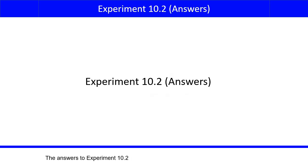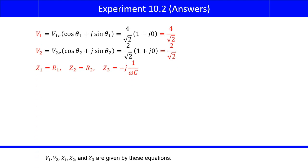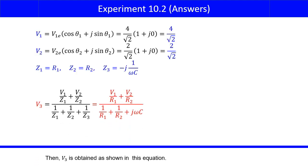The answers to experiment 10.2: V1, V2, Z1, Z2, and Z3 are given by these equations. Then, V3 is obtained as shown in this equation.